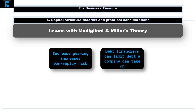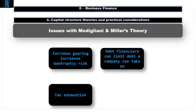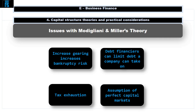Tax exhaustion is another argument: after a certain level of gearing, interest charges can no longer be offset against tax, which increases the cost of debt. Additionally, Modigliani and Miller's theory assumes perfect capital markets, but in the real world markets are not perfect. These market imperfections undermine the theory — specifically, it assumes no concerns about bankruptcy, yet investors are very aware of this risk and will want higher returns to compensate for it.